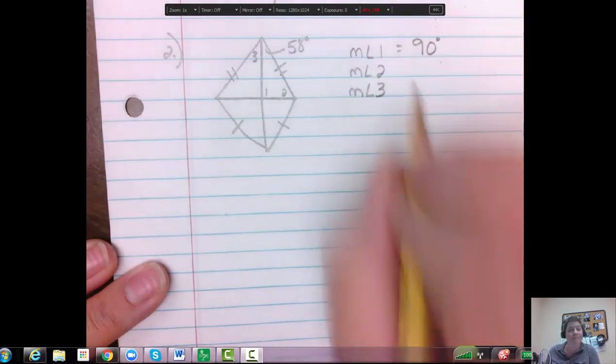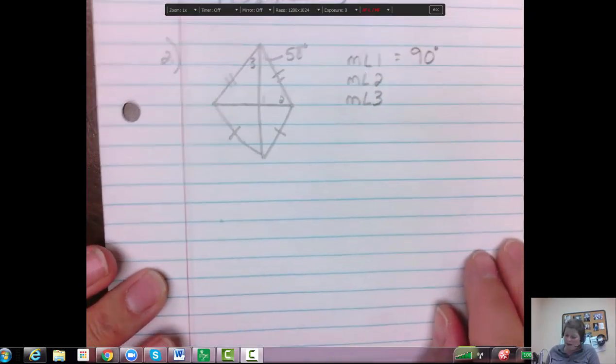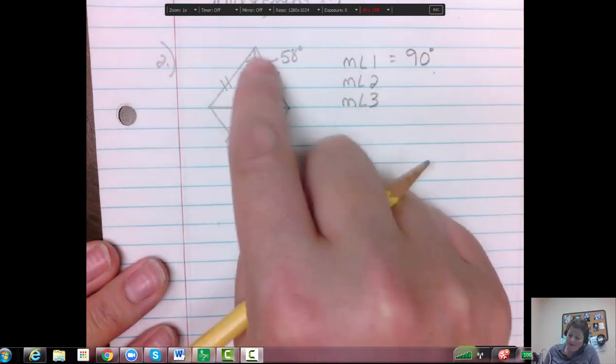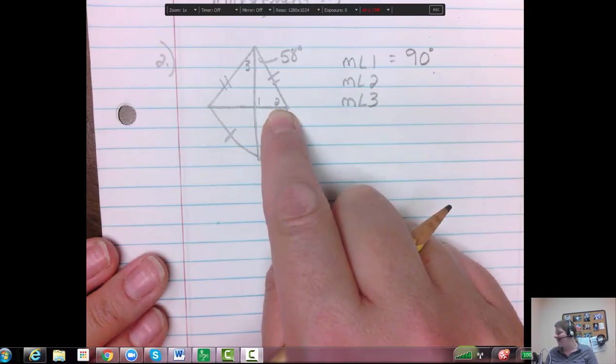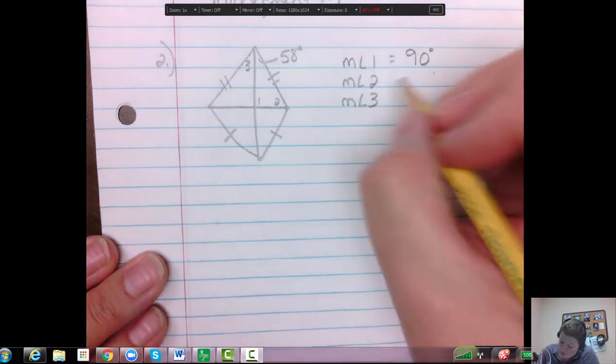Now if that's 90 and that one's 58, we can find two by subtracting them from 180 to get 32 degrees.